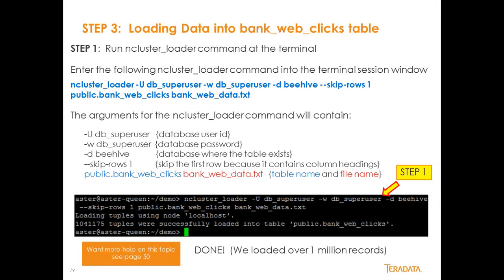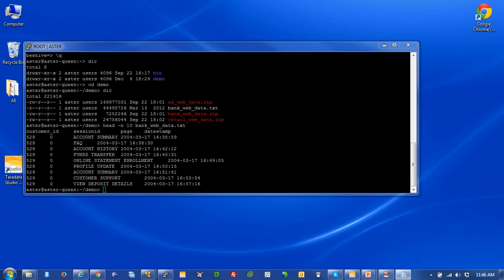ncluster loader is a utility on the queen and loader node for importing data into an Aster table. The command is: ncluster_loader -u db_superuser -w db_superuser -d beehive --skip-rows 1 public.bank_web_clicks bank_web_data.txt. The --skip-rows 1 flag skips the header row. We specify the database, the target table public.bank_web_clicks, and the source file. Let's run that command — it may take a little time.